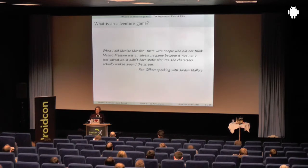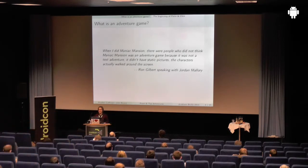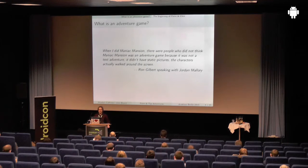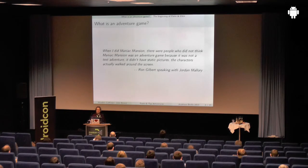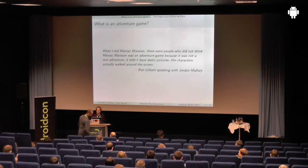This is a quote from Ron Gilbert, one of the great names in the adventure genre. When they first introduced Maniac Mansion, which is one of the most famous adventures and one of the milestones in the genre, people said that's not an adventure game — it doesn't have a text parser, it uses the mouse as input. Nowadays, that's the norm. You hardly find any text adventures anymore; they're still around but they're rare. And now we're at a place where we have touchscreens and a whole load of sensors and GPS available, and so the genre can develop and evolve again.